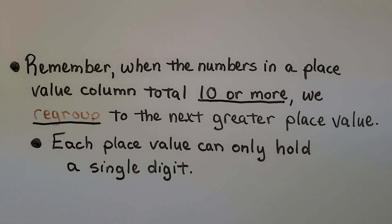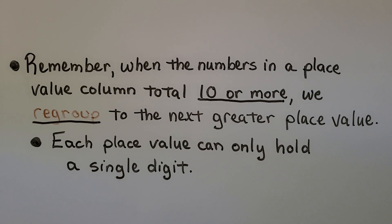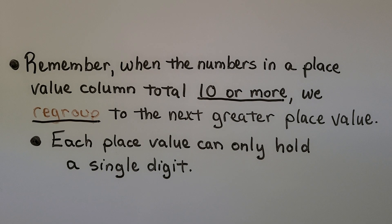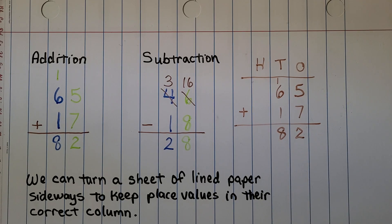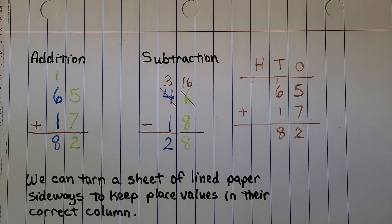Make sure you remember: when the numbers in a place value column total ten or more, we regroup to the next greater place value. Each place value can only hold a single digit.